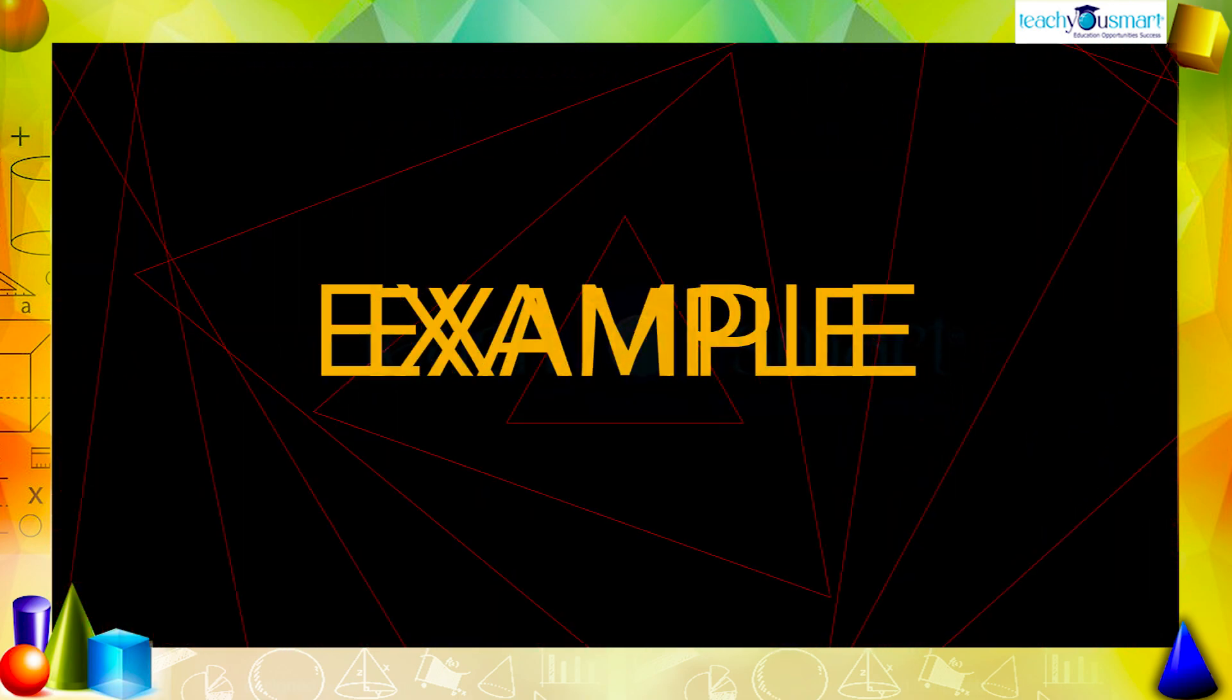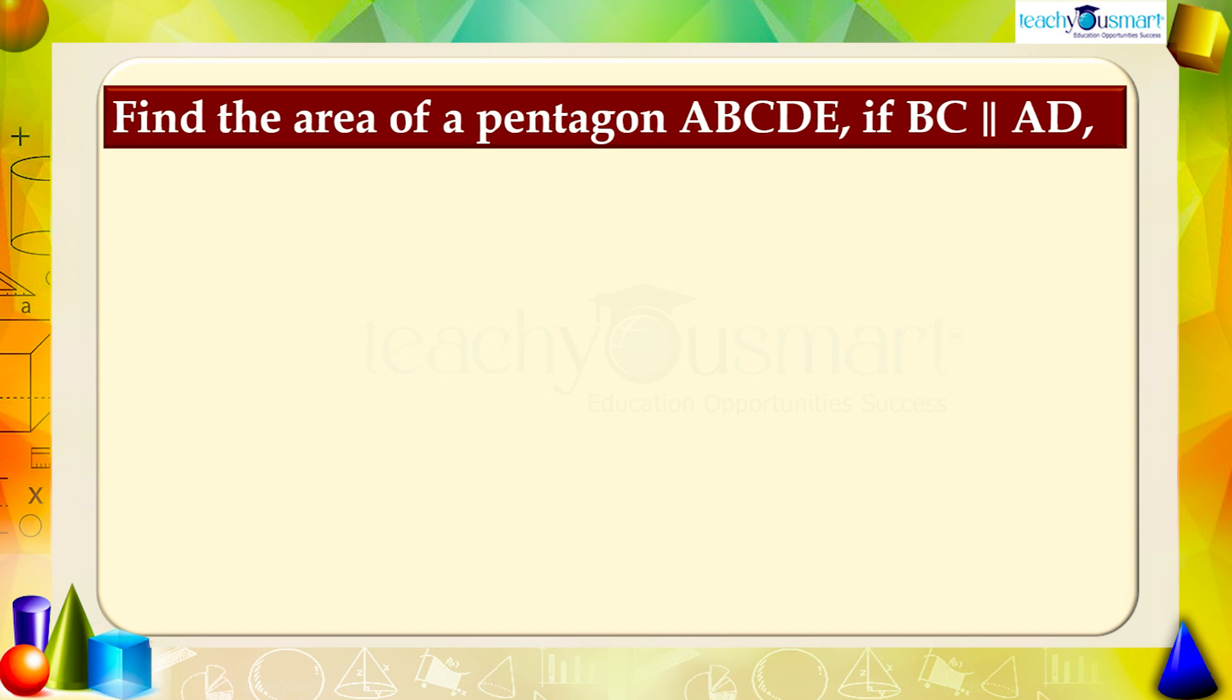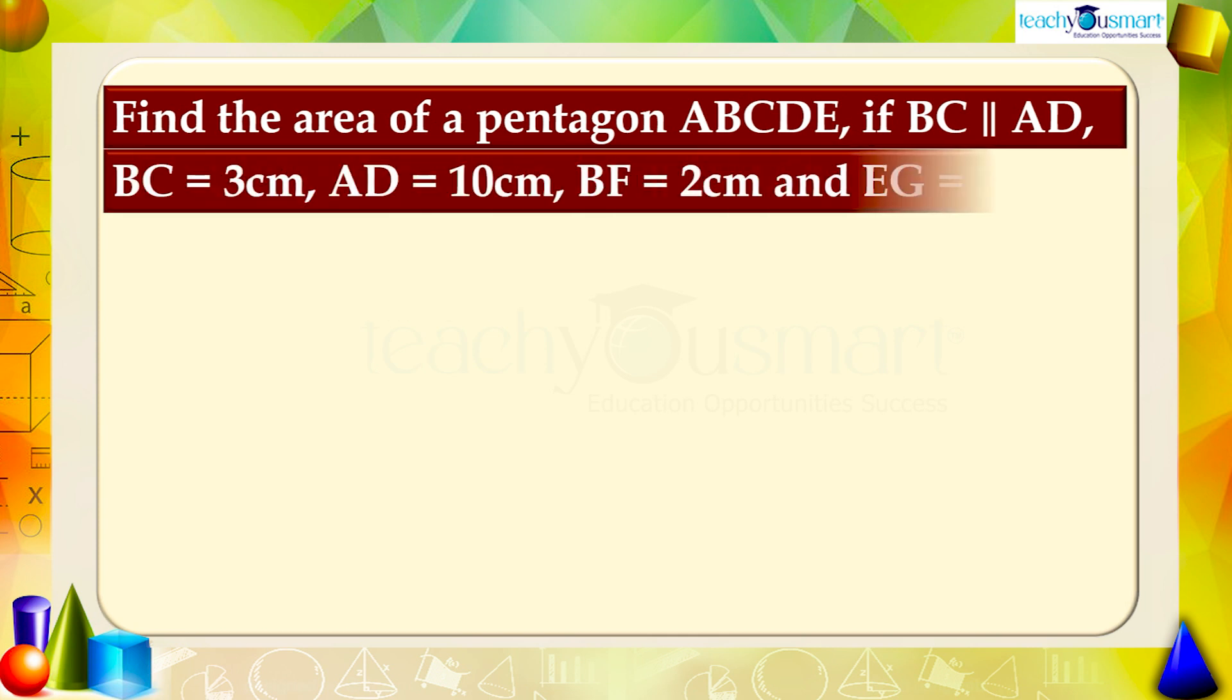Let's see an example. Find the area of a pentagon ABCDE if BC is parallel to AD, and BC equals 3 centimeters, AD equals 10 centimeters, BF equals 2 centimeters, and EG equals 3.5 centimeters.